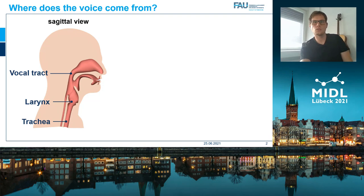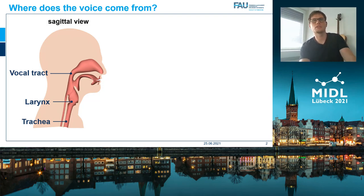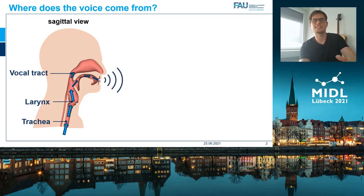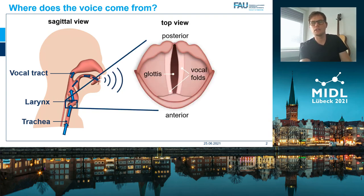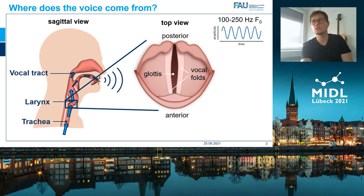We are dealing with patients experiencing voice problems. Let me first walk you through the process of voice generation. Here we see a side view of a human head. Important anatomical landmarks are the trachea, the larynx, and the vocal tract. When we speak, air is coming from the lungs and passes these three anatomical structures. In contrast to breathing, the vocal folds located in the larynx are adapting and oscillating, typically at oscillation frequencies between 100 and 250 Hz.